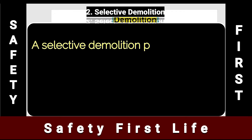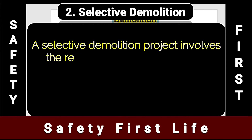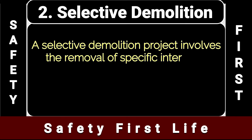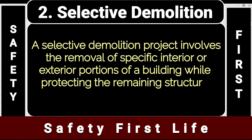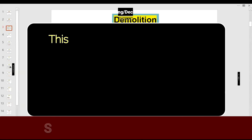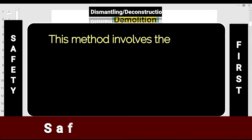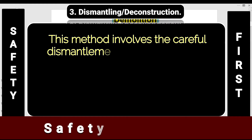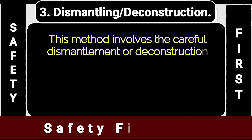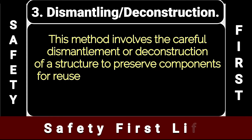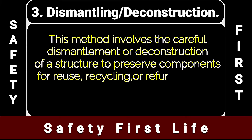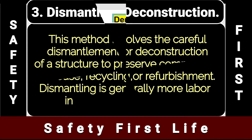Number two, selective demolition. A selective demolition project involves the removal of specific interior or exterior portions of a building while protecting the remaining structure and nearby structures and areas. Number three, dismantling or deconstruction. This method involves the careful dismantlement or deconstruction of a structure to preserve components for reuse, recycling, or refurbishment. Dismantling is generally more labor-intensive than demolition.